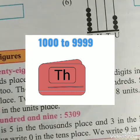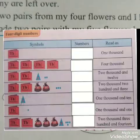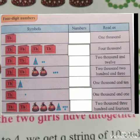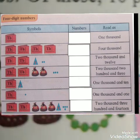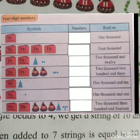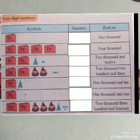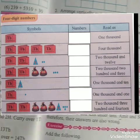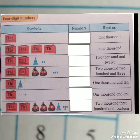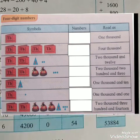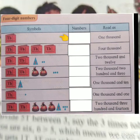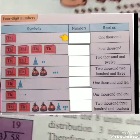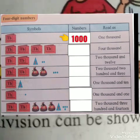See the table. It is a 4-digit number table showing a symbols column and a numbers column. Let's solve it. See the first row — it is showing 1,000 symbols. So we are writing in the box: 1,000.